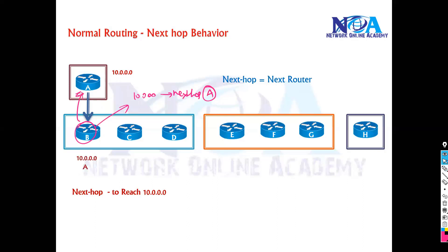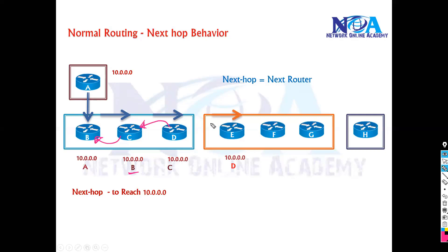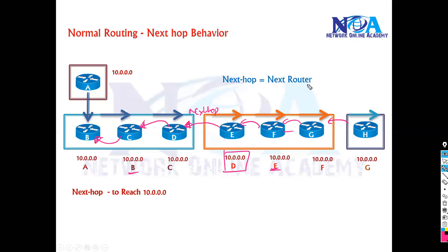Similarly, when this advertisement goes from B to C, router C writes down that the next-hop to reach the 10.0 network is B. From router C to reach the network, the next-hop is C. From router E to reach the 10.0 network, the next-hop means the next router. On router F, when it receives the advertisements, it writes down that the next-hop is E. On router G, the next-hop is F, and on router H, the next-hop is G. So in normal IGP routing, the next-hop equals the next router.